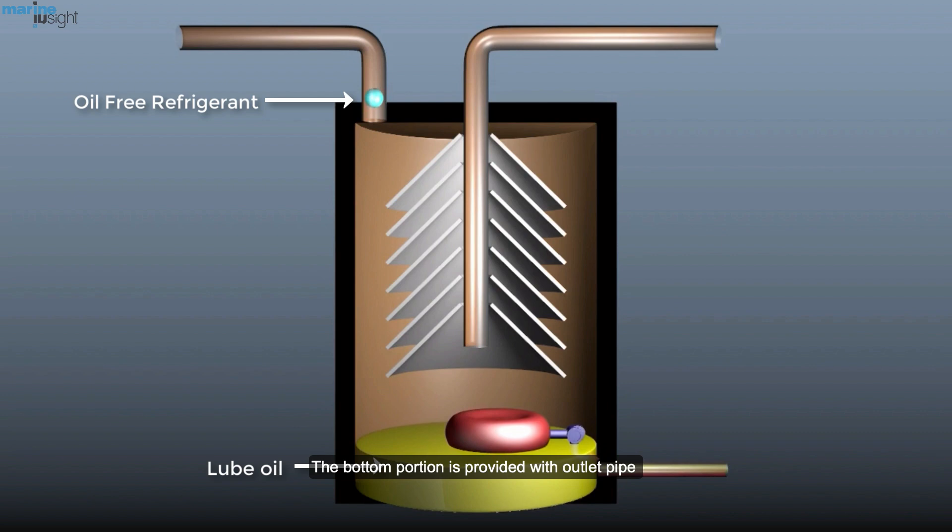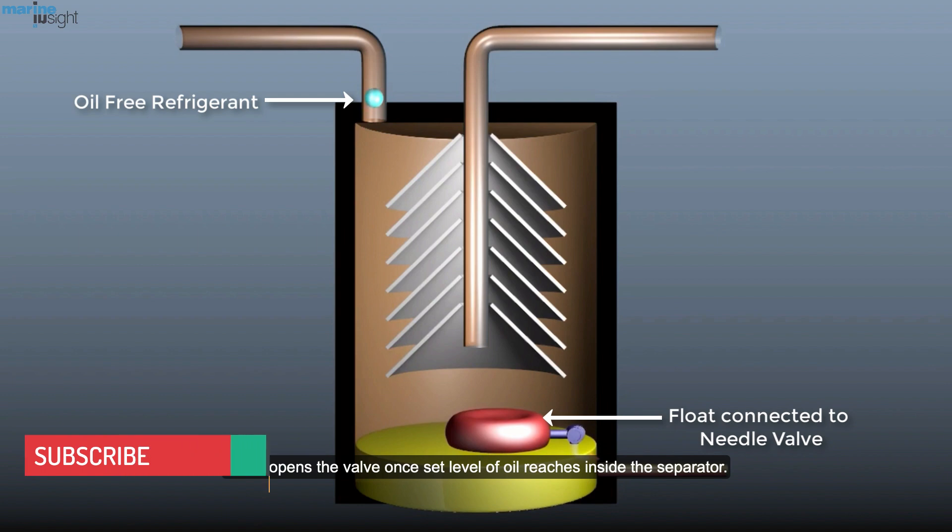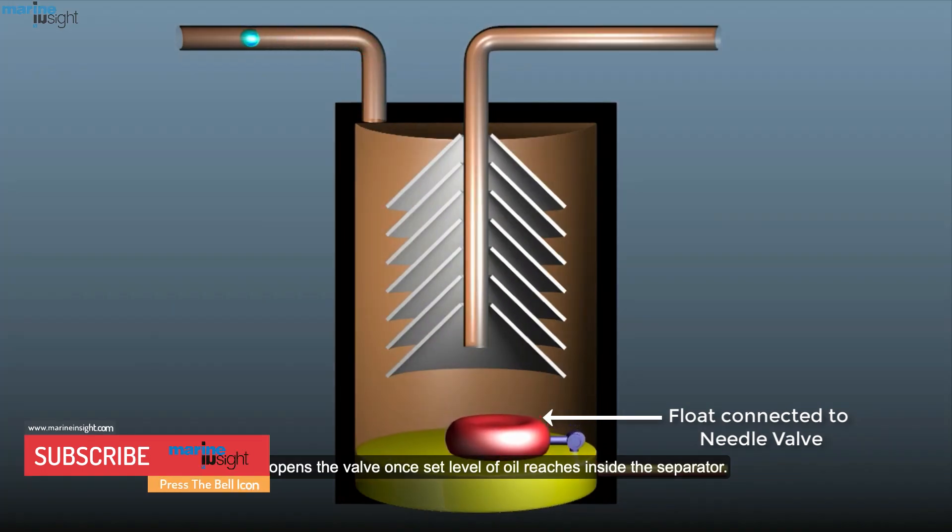The bottom portion is provided with outlet pipe which is connected to the suction of oil compressor crankcase. There is a floating operation needle valve arrangement which opens the valve once set level of oil reaches inside the separator.